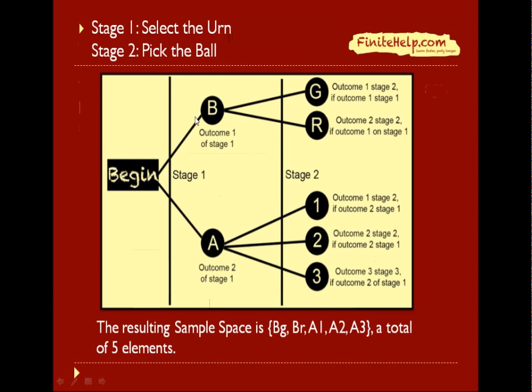Stage 1 is picking an urn. The possible outcomes of picking an urn include urn A and urn B, so two branches out of begin. In stage 2 we have picked a ball.